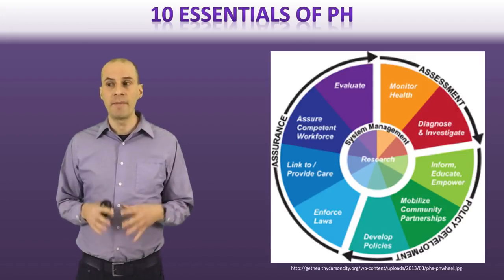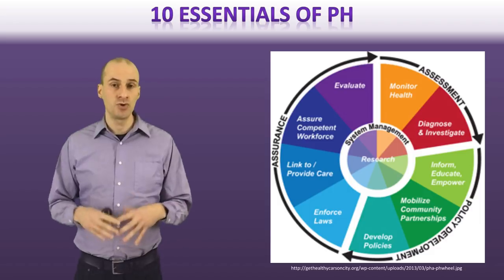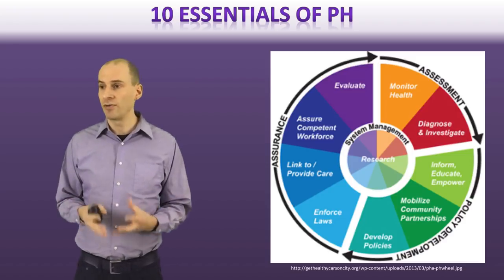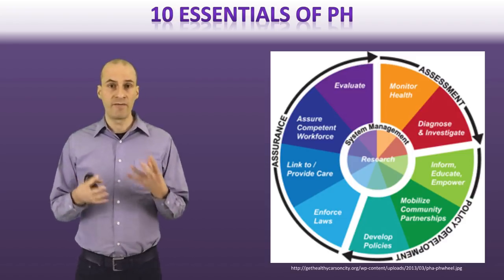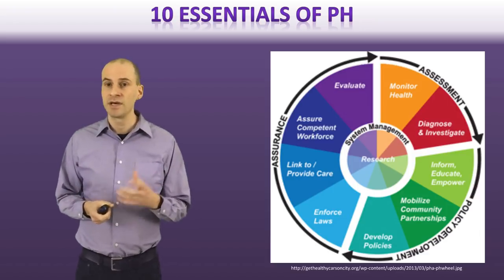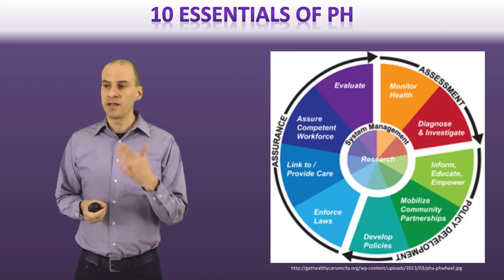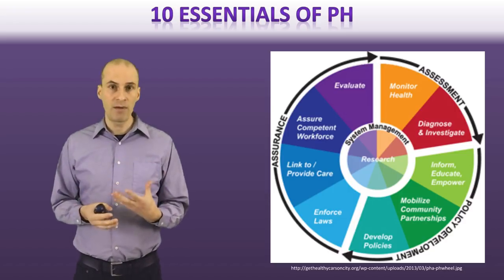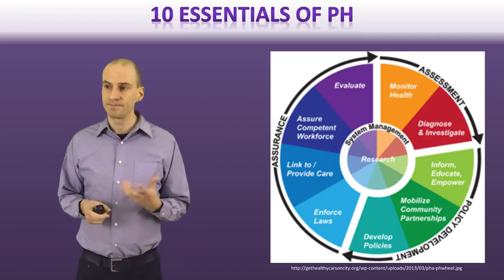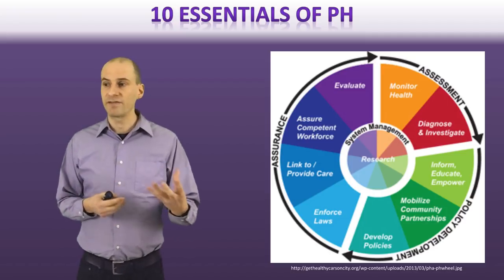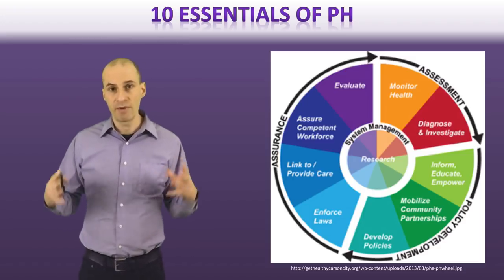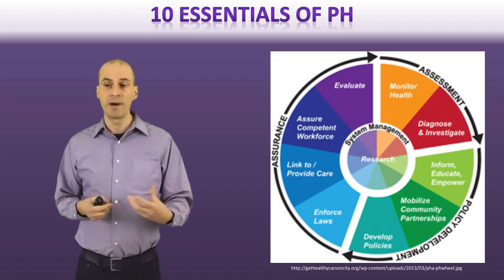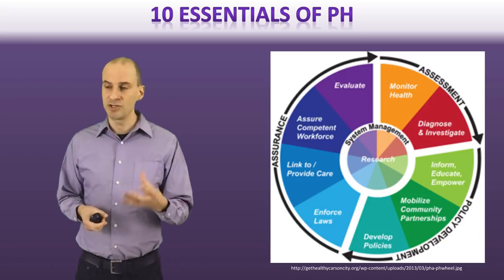Chapter 12 talks a little bit about public health systems that are in place to ensure public health. We've talked previously about the 10 essentials of public health — the idea that we want to monitor health overall to see what's going on, that if we're seeing problems we diagnose and investigate those problems through the assessment phase, that in terms of policy development we want to make sure that we're informing, educating, and empowering people so that if there's a health problem they know what to do. This is done most effectively by mobilizing and interacting with community partners, and together we can find problems that we can address through changing policies.